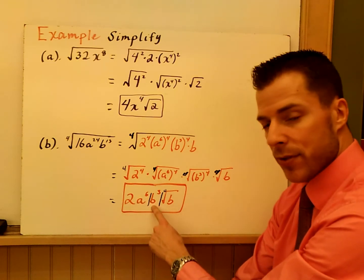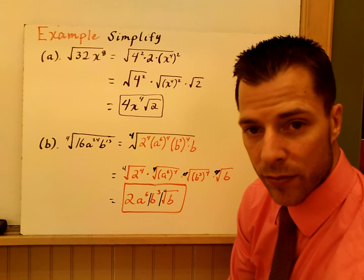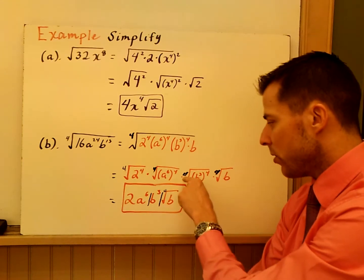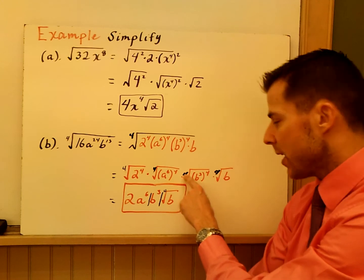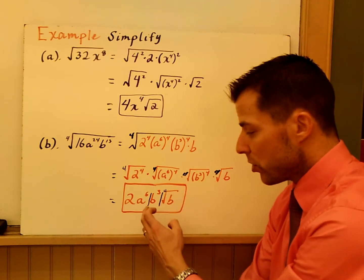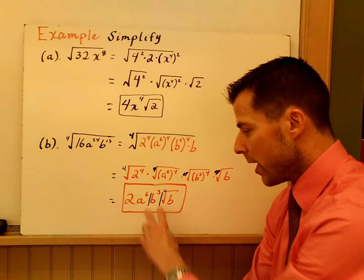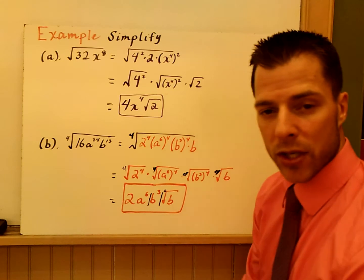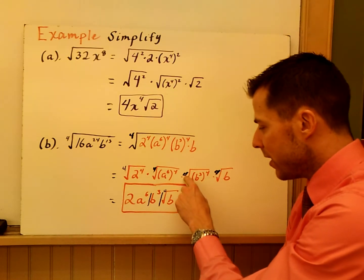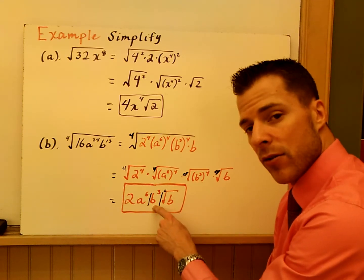You get 2a to the 6th times the absolute value of b cubed, times the fourth root of b. Why is that the absolute value? Because you have an even index, even power, but what comes out is odd — the power b cubed is odd. So to ensure an even-number output, we have to put absolute value around b cubed. Even index, even power, odd output for the power — put absolute value around it.